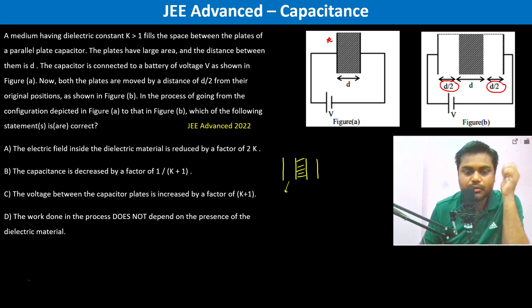For this one it's going to be epsilon not A divided by d/2. For this it's going to be epsilon not times k times A by d. And for this it's going to be epsilon not A divided by d/2.